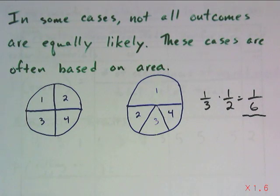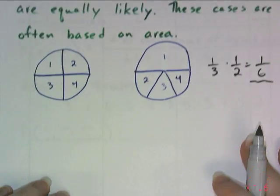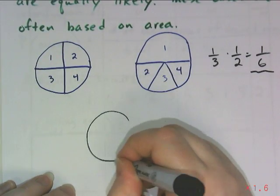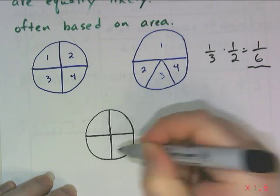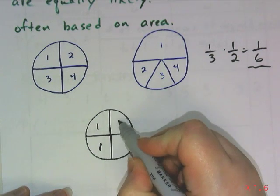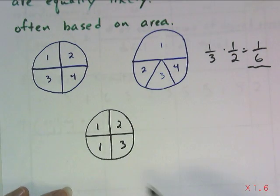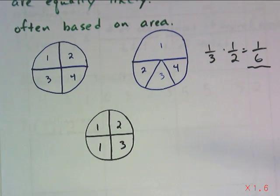The same would be true if we had a circle and a spinner, even if they were the same sizes, but in that case, I have a two and four chance or a half a chance of landing on a one.